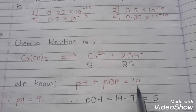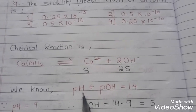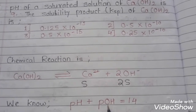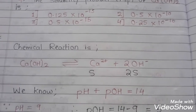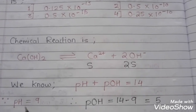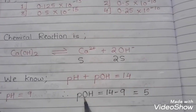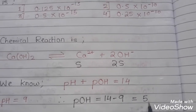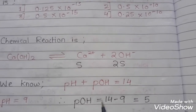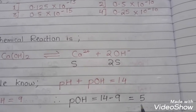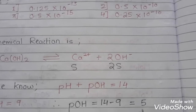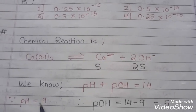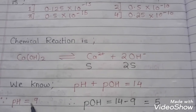Next, since we have the pH, we will find out the pOH. We have pH equals 9. We will substitute the value of pH and get the pOH. So pOH is equal to 14 minus 9, which equals 5. We have got pOH is 5 and pH is 9.